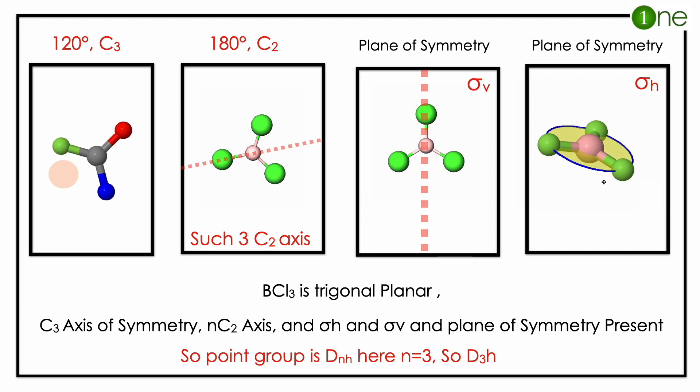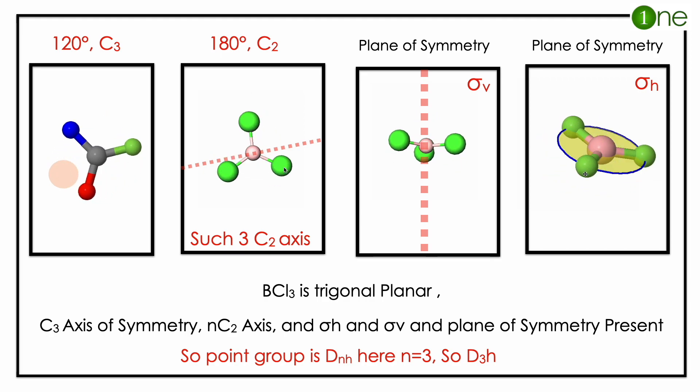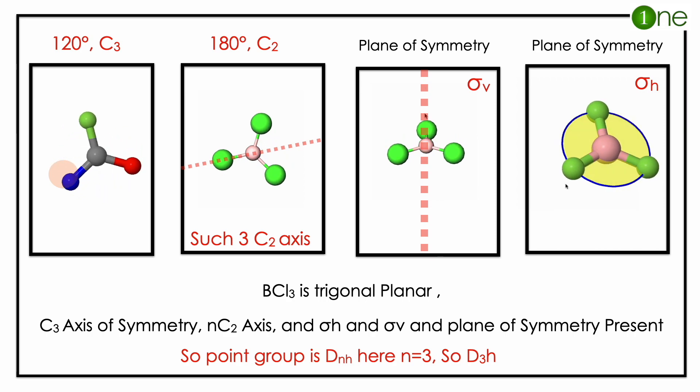To find the point group, you should imagine the molecule in the 3D way. BCl3 is trigonal planar. Basically, it has 120 degree rotation in the axis of symmetry, so if you rotate 120 degrees, you will get the same molecule again.